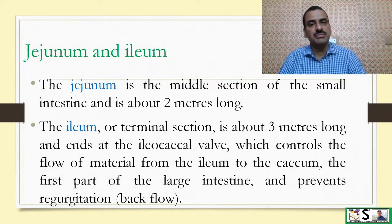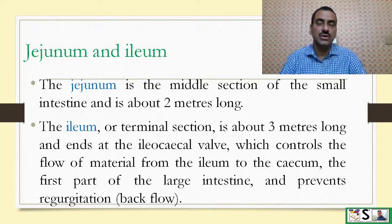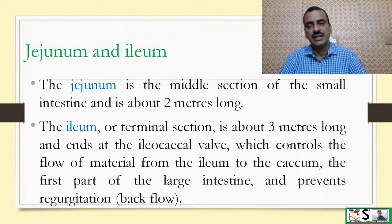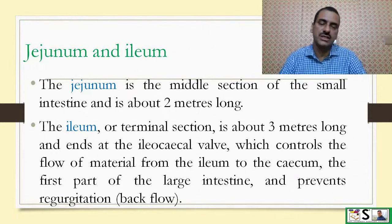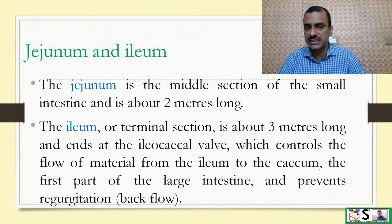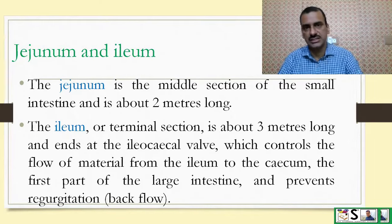The jejunum is the middle section of the small intestine and is about two meters long. The ileum is the terminal section, about three meters long, and ends at the ileocecal valve which controls the flow of material from the ileum to the cecum. The cecum is the first part of the large intestine, and the ileocecal valve prevents backflow or regurgitation of contents that have reached the large intestine.